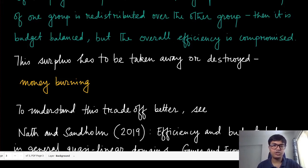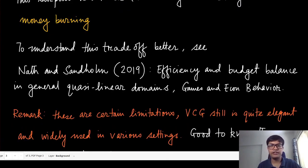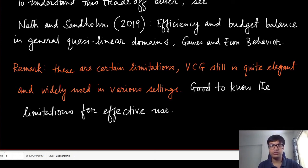The surplus that must be taken away is known in the literature as 'money burning.' There is interesting work examining the trade-off between money burning and efficiency in quasi-linear domains. The reason we discussed all these limitations is to give a clear picture of when VCG can be used most effectively — it comes with many positive properties, but knowing its limitations lets you use it much more wisely.